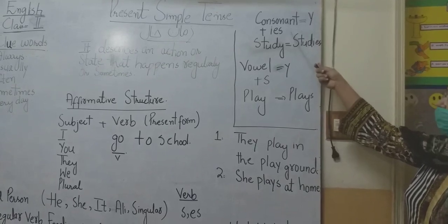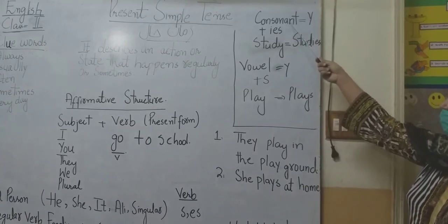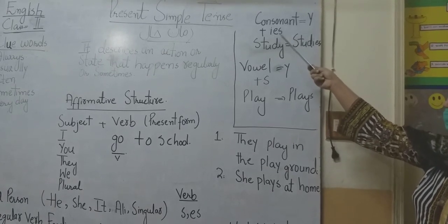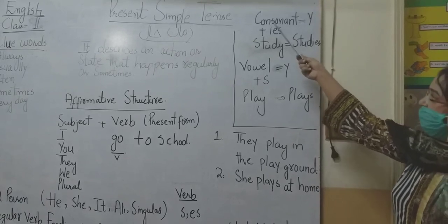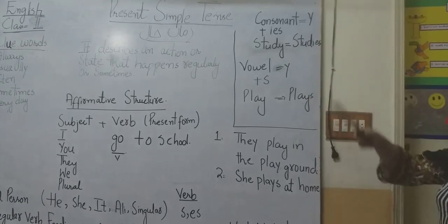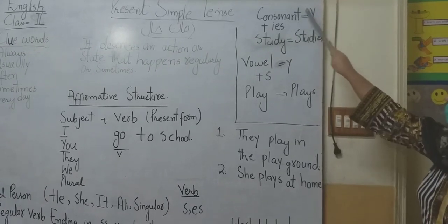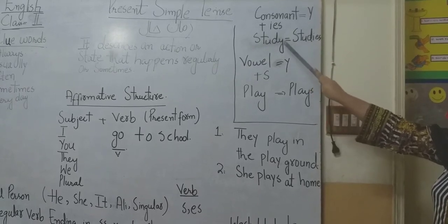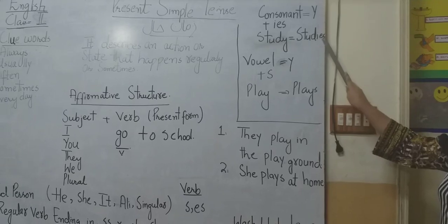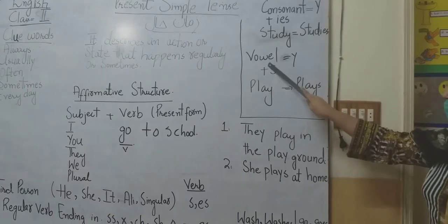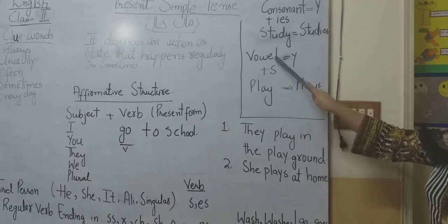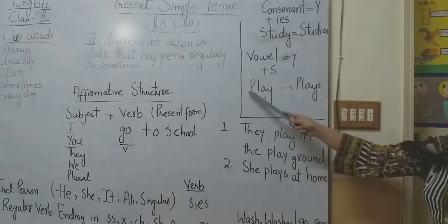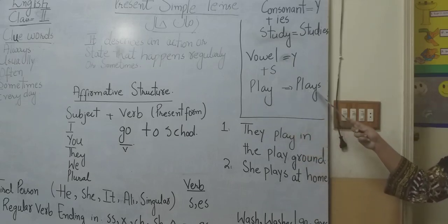If the word ends in a consonant plus Y, we replace Y with IES. For example: S-T-U-D-Y, study → studies. If the word ends in a vowel plus Y, we simply add S. For example: P-L-A-Y, play → plays.